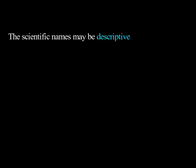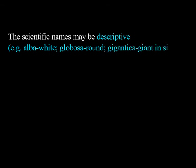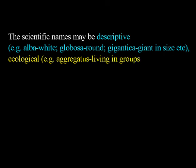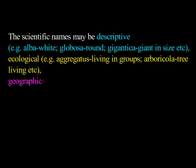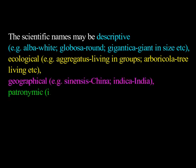Scientific names may be descriptive, for example alba meaning white, globosa meaning round, gigantica meaning giant in size. They may also be ecological, for example aggregatus meaning living in groups, and arboricola meaning tree-living. Or they may be geographical, for example sinensis meaning from China, and indica meaning present in India.